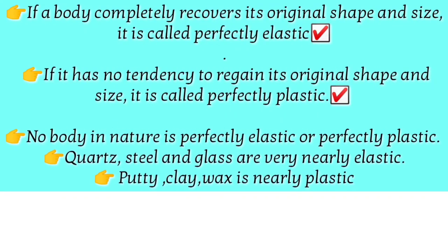If a body completely recovers its original shape and size, it is called a perfectly elastic body. Quartz, steel, and glass are very near to a perfectly elastic body — when you apply and then remove external force, the body recovers its shape and size 100%. If it has no tendency to regain its original shape and size, it is called a perfectly plastic body — for example, clay and wax.